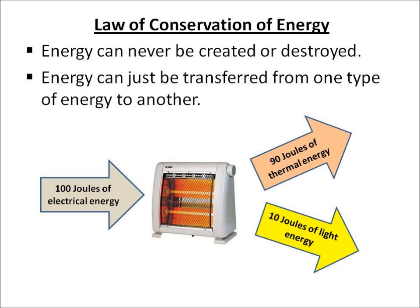This is the law of conservation of energy: energy can never be created and it cannot be destroyed. Instead, energy is just transferred from one type of energy to another. So in the diagram, we've got electrical energy going in, and thermal energy and light energy coming out. The amount of energy going into the heater — 100 joules — is the same as the amount of energy coming out: 90 plus 10.